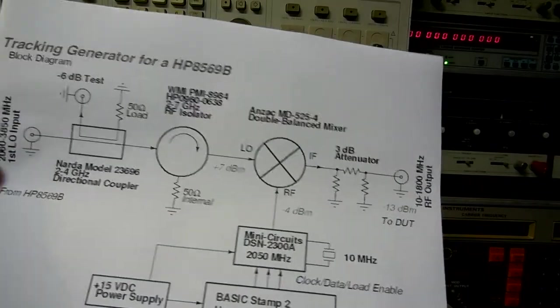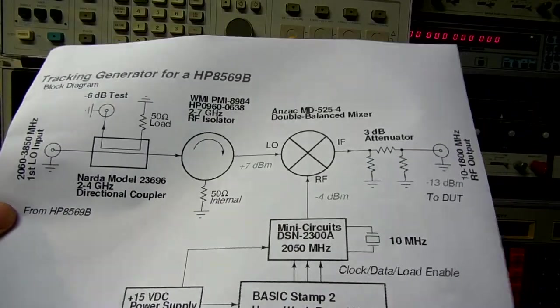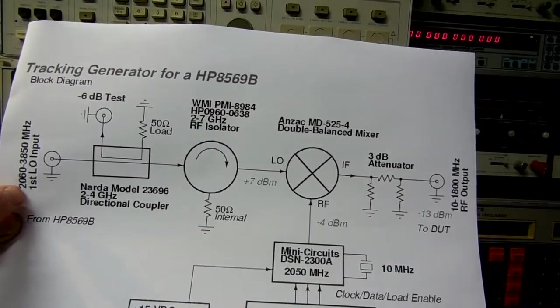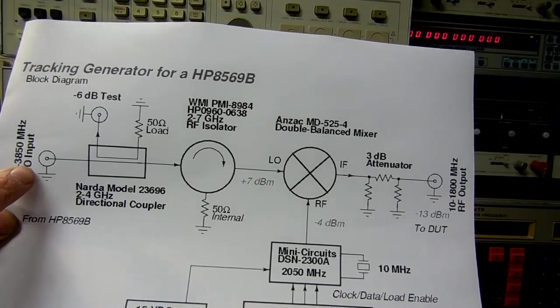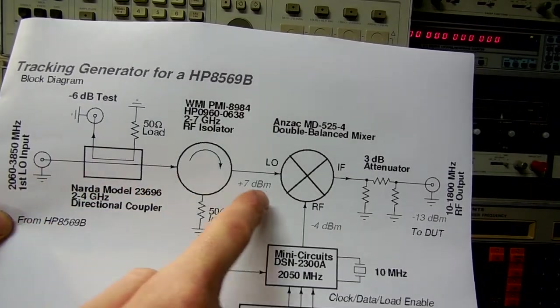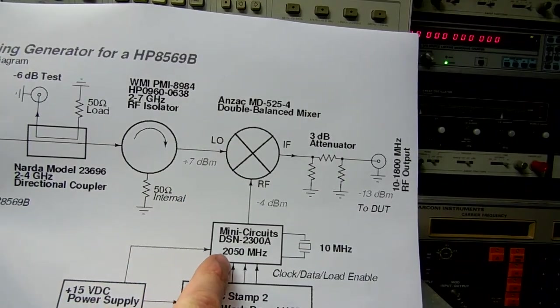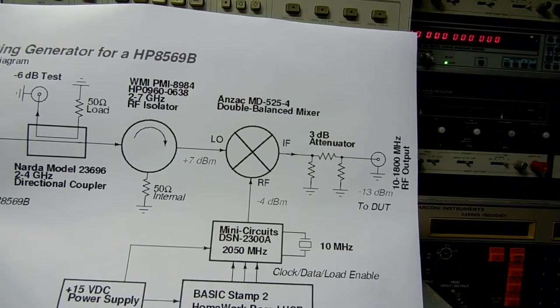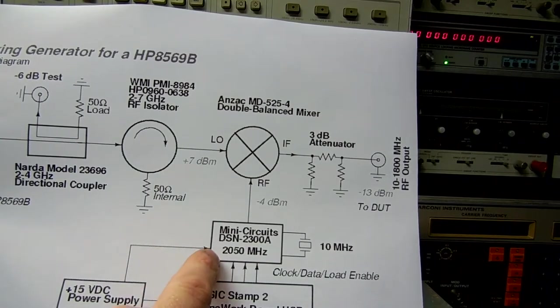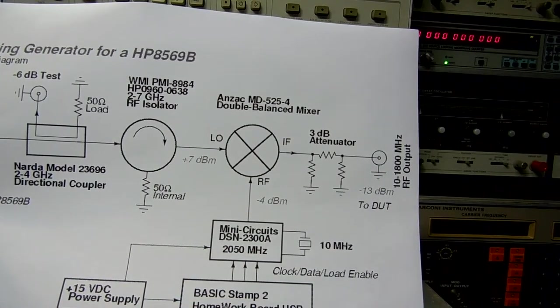It works by tapping or tracking the first local oscillator output from the Spectrum Analyzer itself and then mixing it with a frequency which is equal to the IF frequency internal to the Spectrum Analyzer which is 2050 Megahertz in this case.